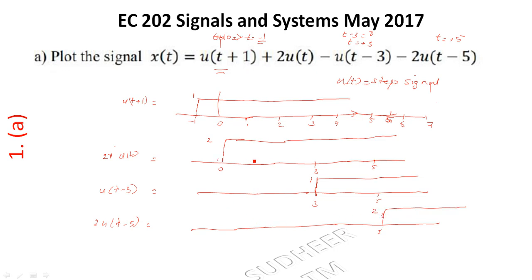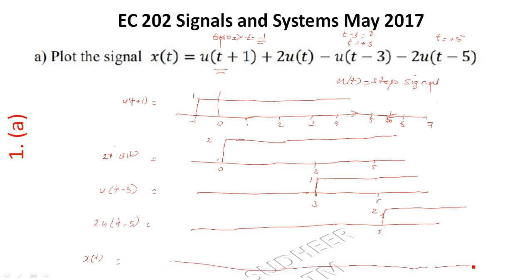So we have four input signals: u(t+1) starting from t = -1, u(t) starting from t = 0, u(t-3) which is 3-unit delayed starting from t = 3, and u(t-5) which is 5-unit delayed starting from t = 5. To find x(t), we add these signals at each instant.